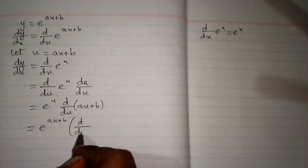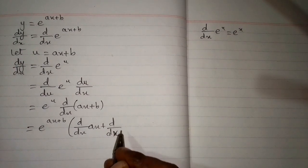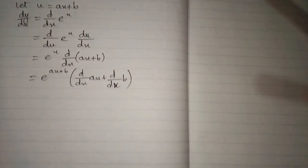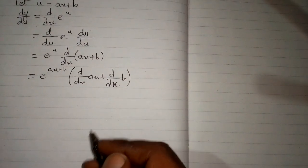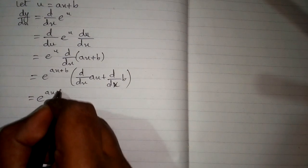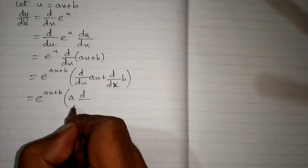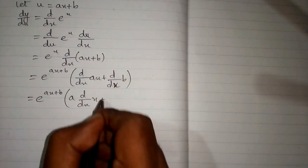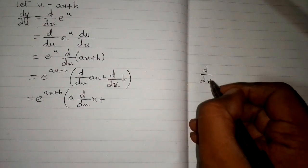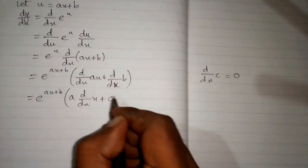So we have d by dx of ax plus d by dx of b. Now the coefficient of x can be written before the derivative. So we have a times d by dx of x, plus the derivative of any constant is 0, so the derivative of b is 0.